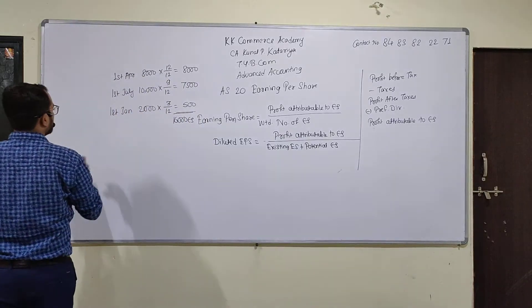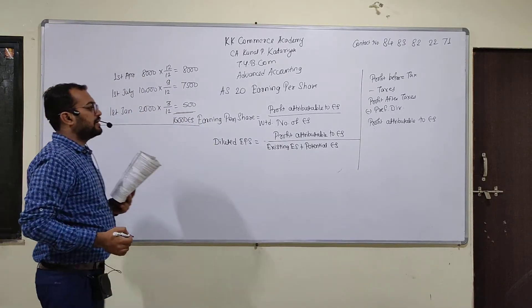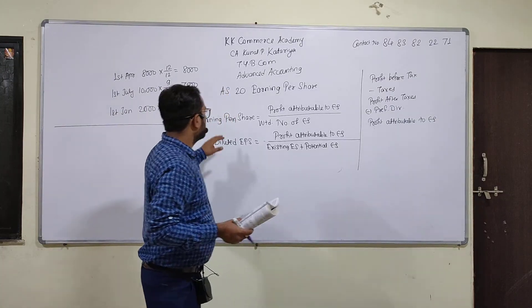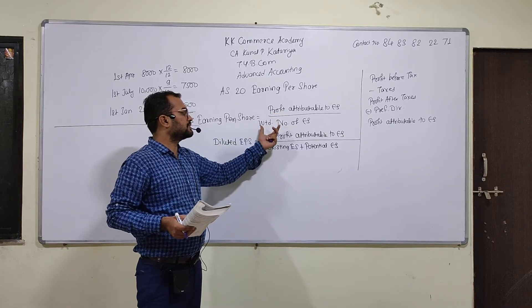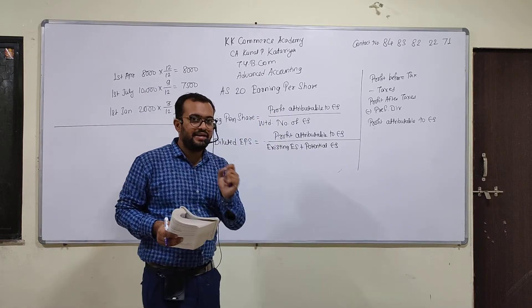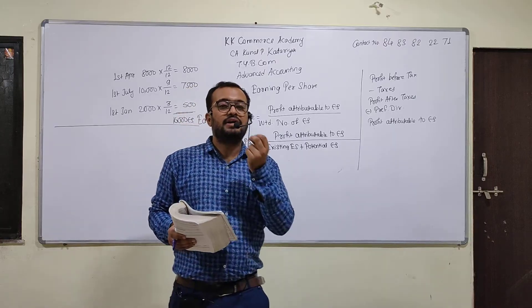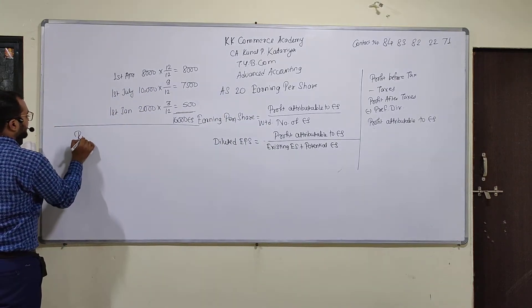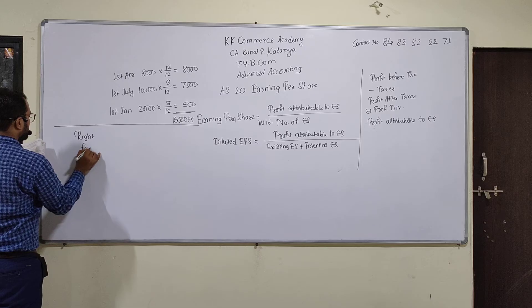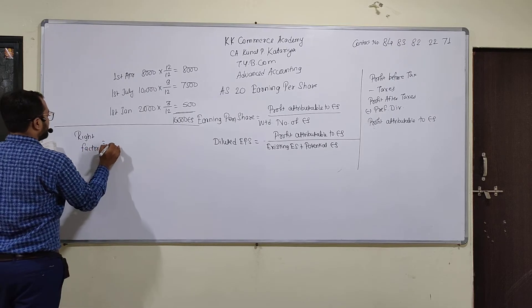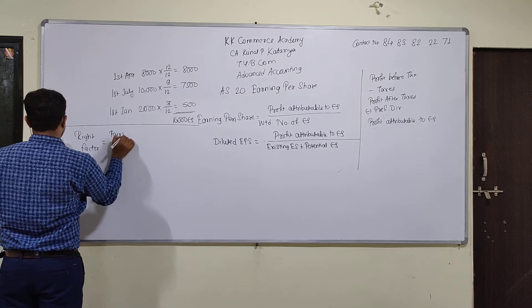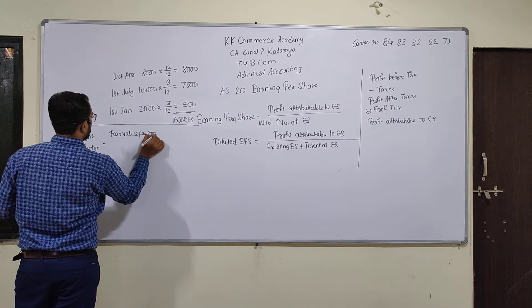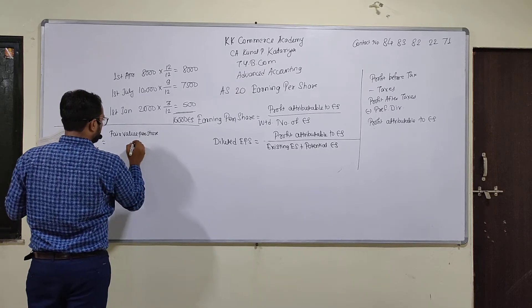So if you have a question about EPS and right shares, the EPS formula uses profit attributable divided by weighted number of shares. But for right shares, we have to calculate the right factor. The right factor formula is based on the fair value per share — we have to calculate the fair value per share immediately before the right issue.